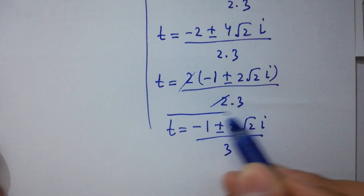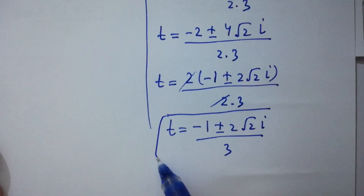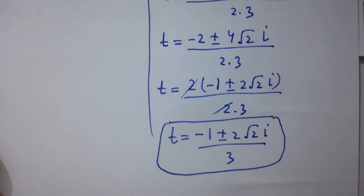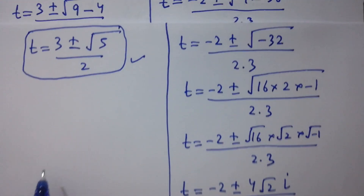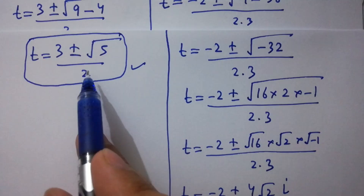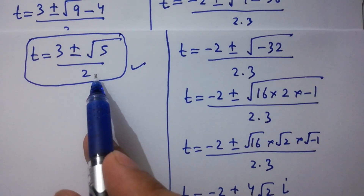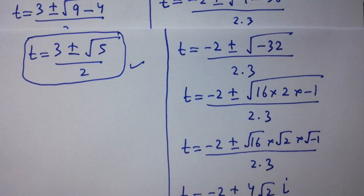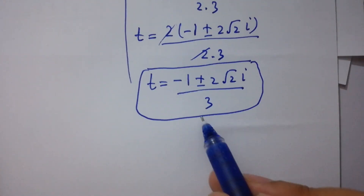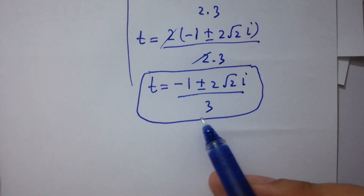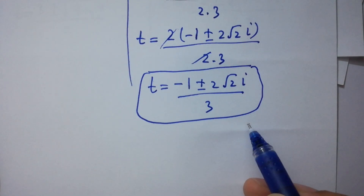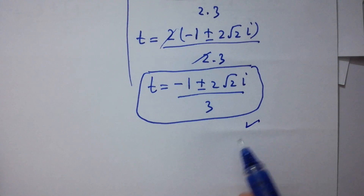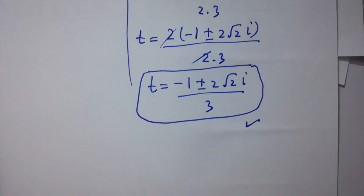So the values of t are: t equals 3 plus or minus square root of 5, over 2, and t equals minus 1 plus or minus 2 square root of 2 i, over 3.